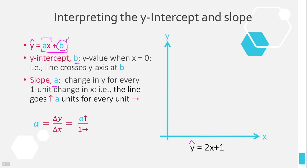Let's talk about the Y-intercept first because we would graph it first. The term that does not have X attached to it — here that's 1 — tells us that when X is 0, we plug in 0 and get 2 times 0 plus 1, which equals 1. The Y-intercept is always where we cross the Y-axis, so here at the point 1 is where we put our first dot. All you need to graph a line is two distinct points.